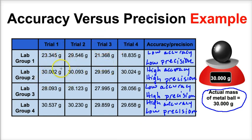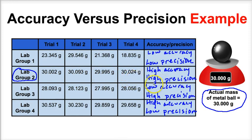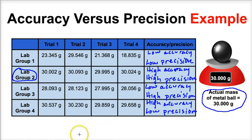Looking at all the data and comparing the four lab groups, lab group two would get the highest grade — they have high accuracy, meaning their measurements are very close to the actual mass, and all four trials are very close to one another, so they have high precision. That's what we're striving for in the lab: high accuracy and high precision. I hope this was helpful!